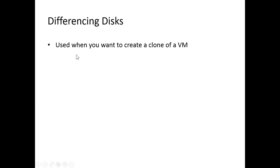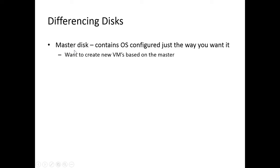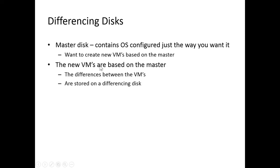Let's now discuss differencing disks. Differencing disks are used when you want to create a clone of a virtual machine — for example, if I have File Server 1 set up just the way I want and I want a whole bunch of other file servers just like it. We start out with a master disk containing the operating system configured the way we want. We create new virtual machines based upon the master, and the differences between the virtual machines are stored on the differencing disk.